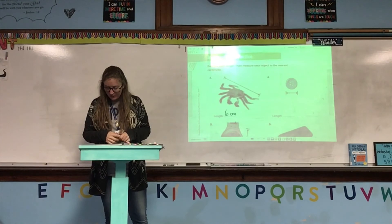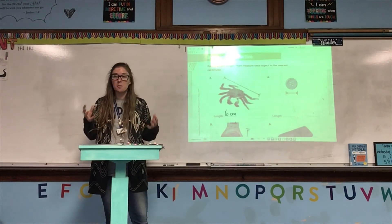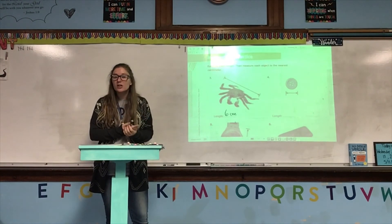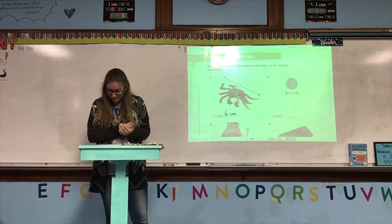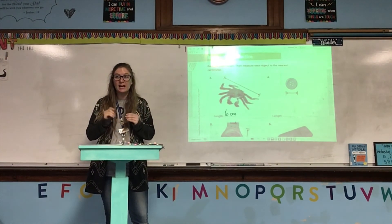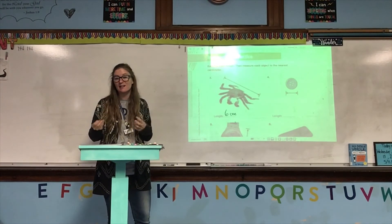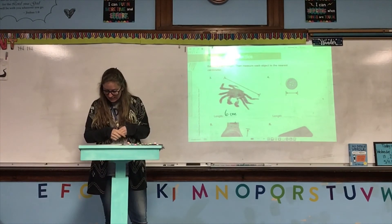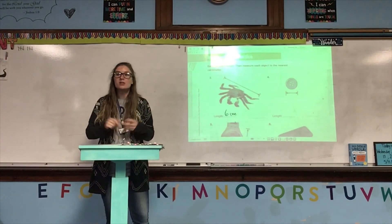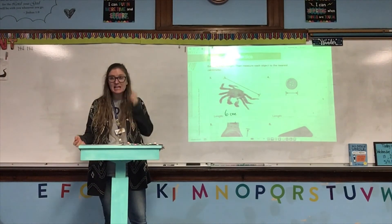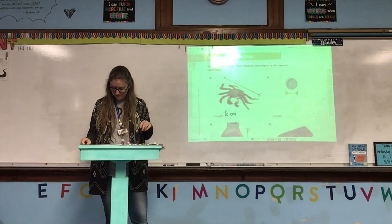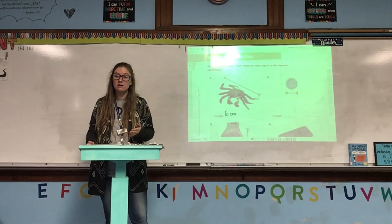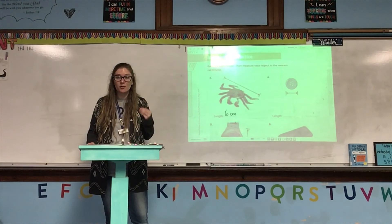Then, if you look at the back, numbers nine through eleven are word problems. For number nine, you're just comparing something to the size of a giraffe. Number ten, you are choosing the best estimate — don't forget to say why you chose that estimate. Number eleven is a critical thinking question, so make sure that you fully answer that question. Don't just write one sentence down because that's not going to answer the question. Make sure to put some thought into it.